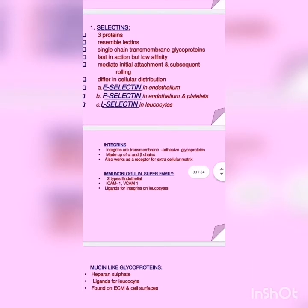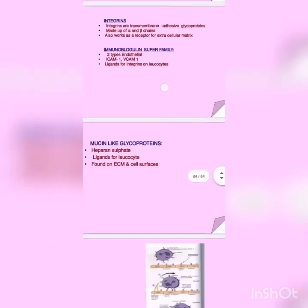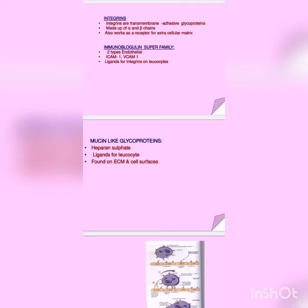What are integrins? Integrins are transmembrane adhesive glycoproteins. They are made up of alpha-beta chains and also work as receptors for extracellular matrix. Immunoglobulin superfamily: two types on endothelium — ICAM-1 and VCAM-1 — act as ligands for integrins on leukocytes, helping leukocytes attach to endothelium. Mucin-like glycoprotein: heparin sulfate — ligand for leukocytes found on ECM (extracellular matrix) and cell surfaces.